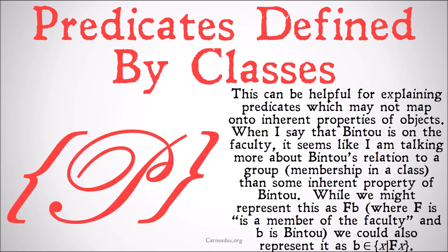This can be helpful for explaining predicates which may not map onto inherent properties of objects. When I say that Bintu is on the faculty, it seems I'm talking more about Bintu's relation to a group or membership in a class than some inherent property of Bintu. While we might represent this as FB — where F is 'is a member of the faculty' and B is Bintu — we could also represent it as B is a member of the set X such that X is a member of the faculty.